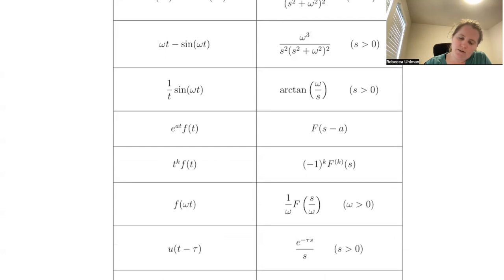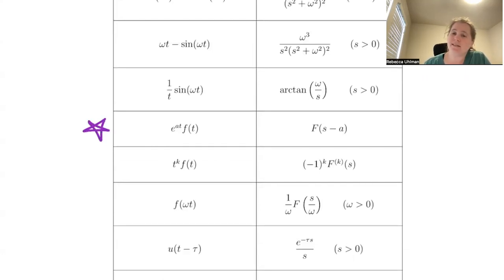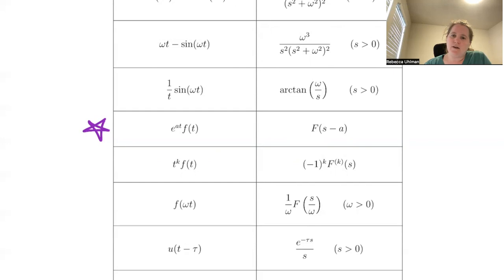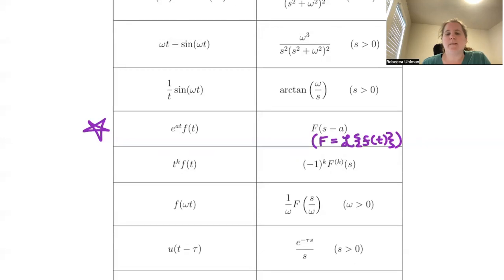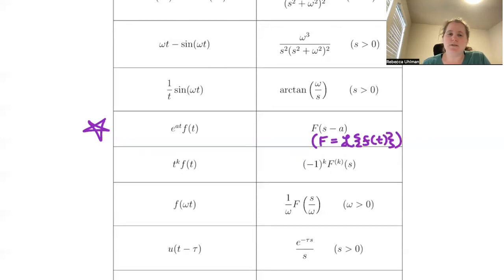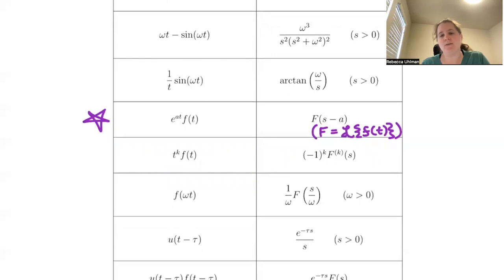Some extremely useful transformation rules: if we have e to the at times any function already listed, you take the Laplace transform F of s and just shift it to F of s minus a. So an e to the at factor in the original function appears as a horizontal shift in the Laplace transform. Here, capital F is just the Laplace transform of lowercase f of t.